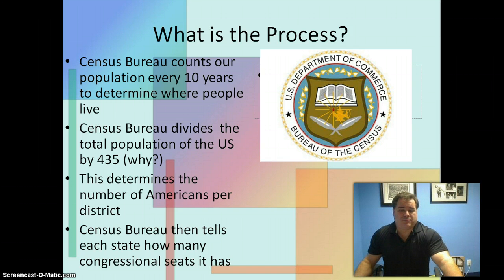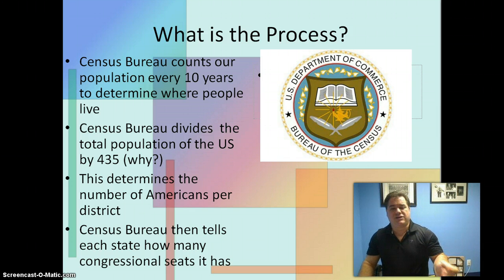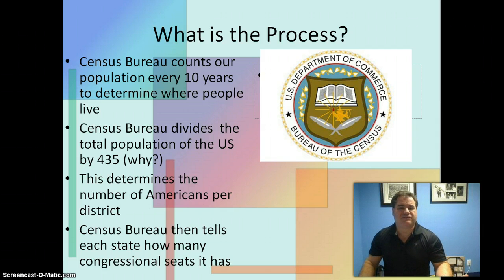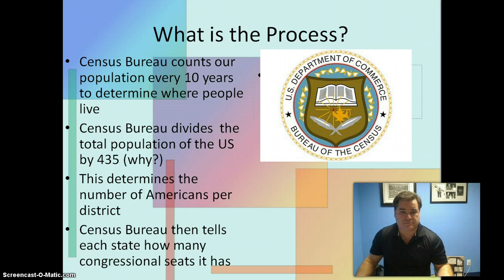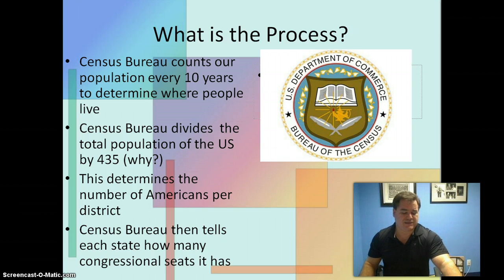The Census Bureau totals up the number of people in each state and tells each state whether it has gained or lost population, and how many congressional seats it now has. So if you live in a state with just over 7 million people, that state will have 10 congressmen, because there are 700,000 people per congressional district. Seven million divided by 700,000 is 10. Next, the states have to redraw the congressional district lines.